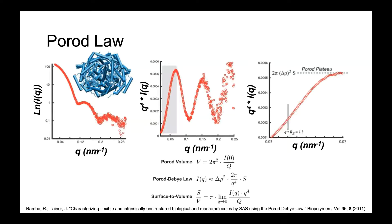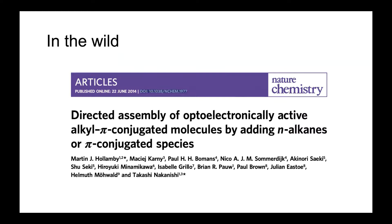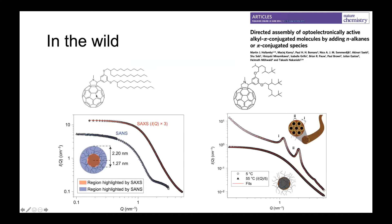Now let me give you a few examples of how we might apply this in the real world. In this study, a group was studying the directed assembly of various optoelectronically active conjugated molecules. They had C60 balls with different ligands attached, and these ligands would change the self-assembly on different scales. They had a Bucky ball with four different chains, self-assembling into a core particle with ligands hanging off. Using SAXS, they were able to determine the exact size of the core, the ligands, and the overall assembly.